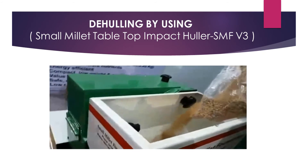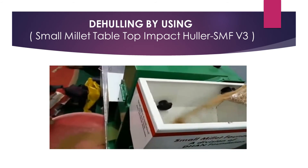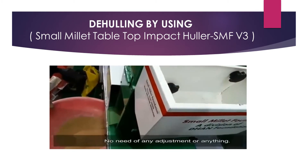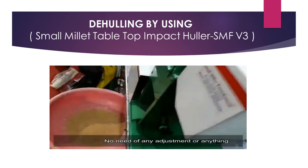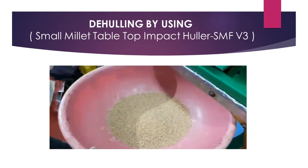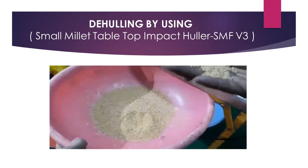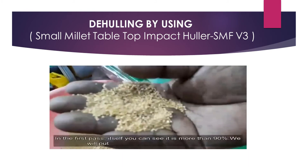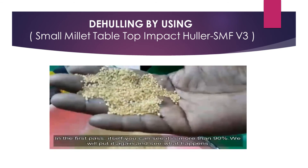Let's look at a small video showing the de-hulling operation using a de-huller. This is a yellow foxtail millet being inserted into the hopper. These are further broken down and de-hulled. This huller can perform this operation for any of the millets, whether it's foxtail millet, ProSomulet or any millet. In the first pass it has given 90% accuracy and we will put it again to achieve 100%. De-hulling is done using this type of impact huller, SMF V3.